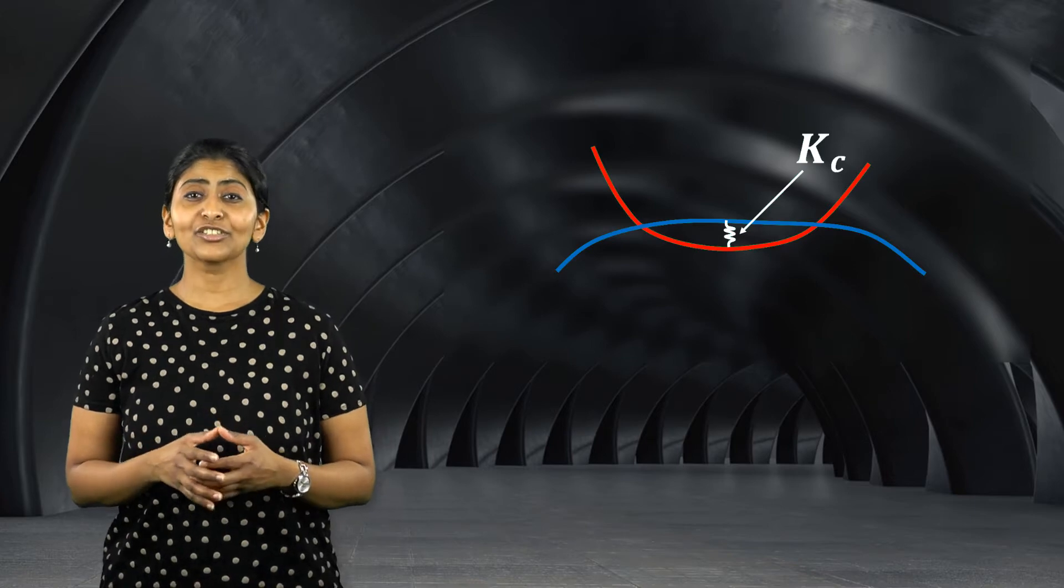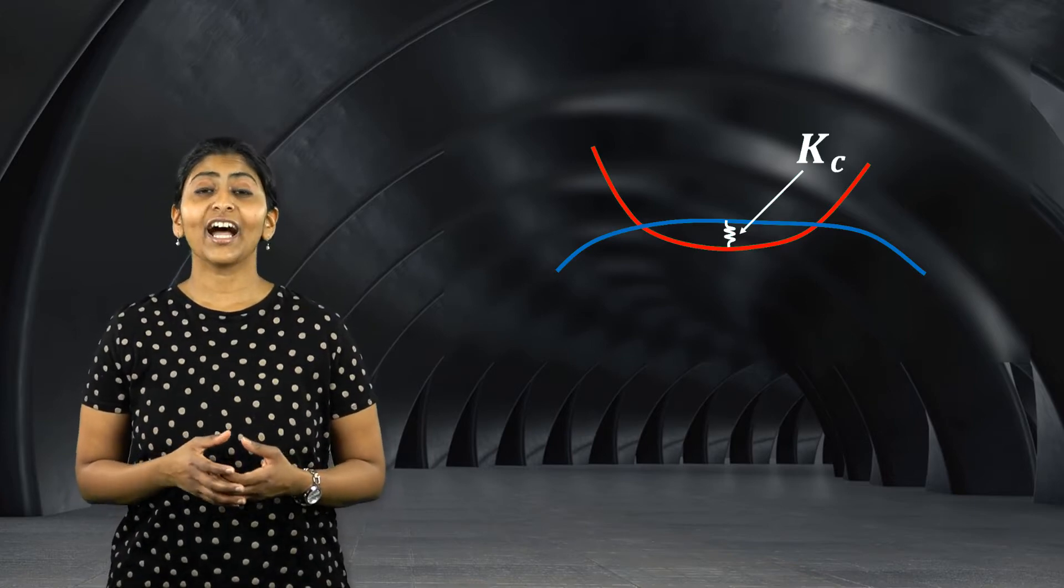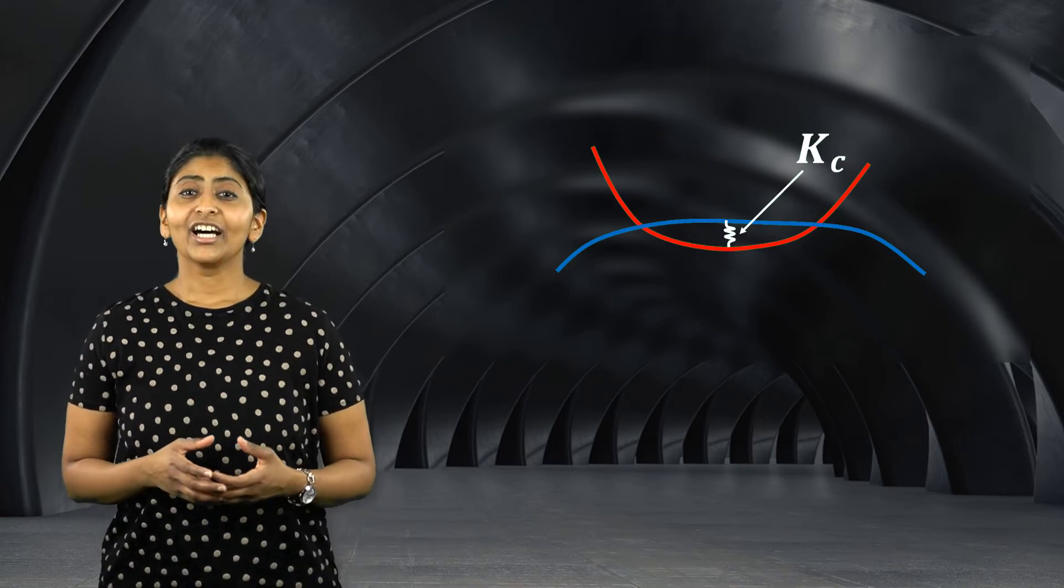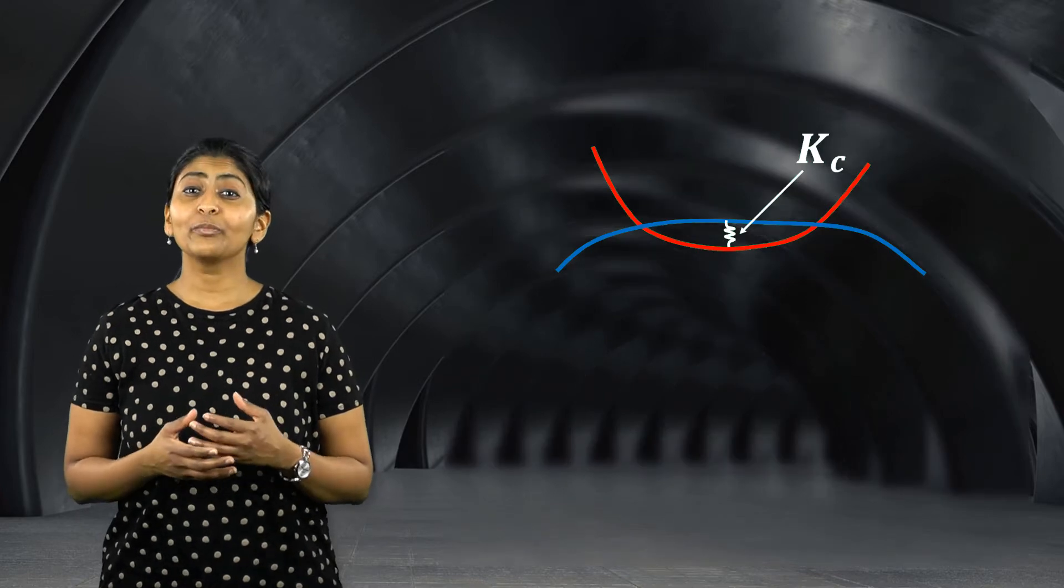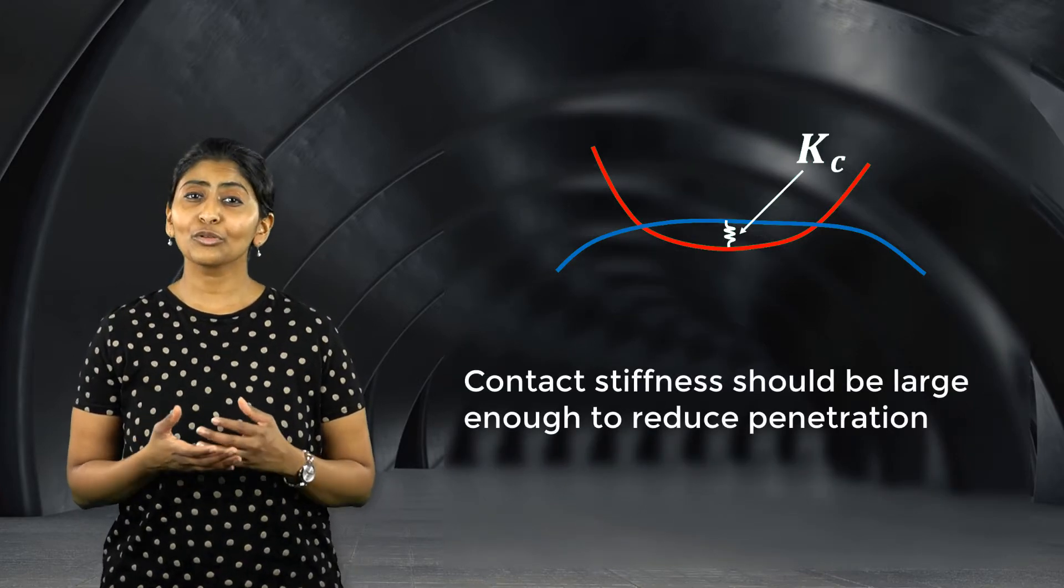The stiffness of this spring, which provides resistance to inter-penetration of two bodies, is known as the contact stiffness. As discussed before, the contact stiffness should be large enough to reduce the penetration to close to zero.